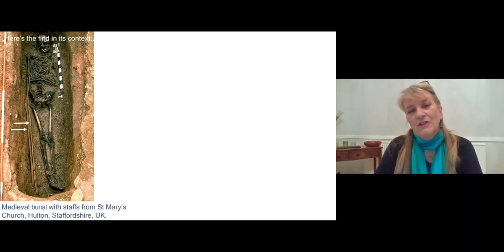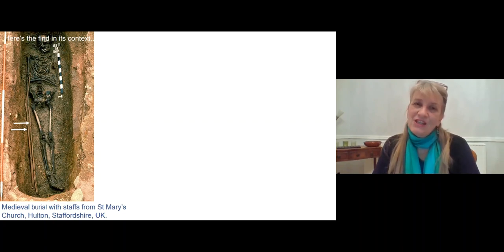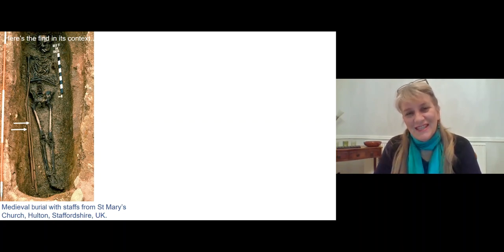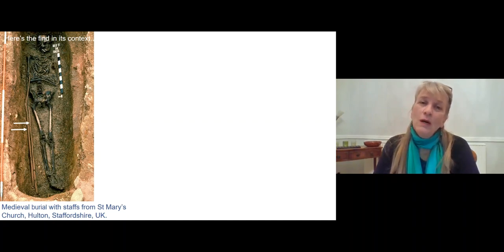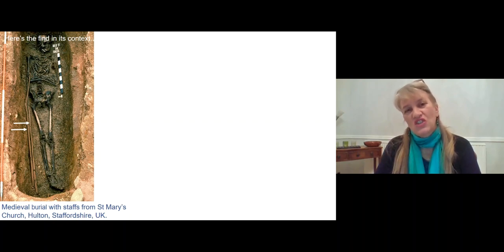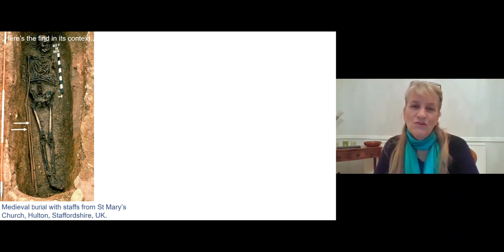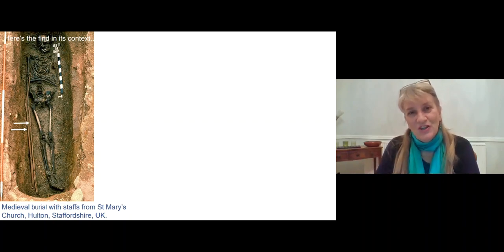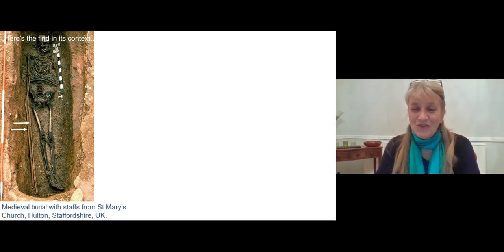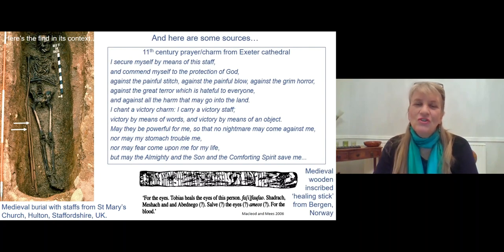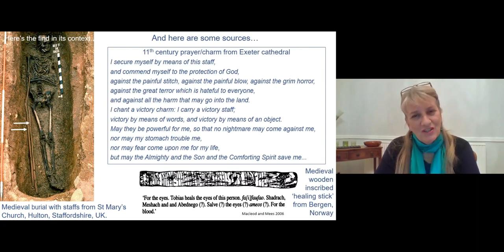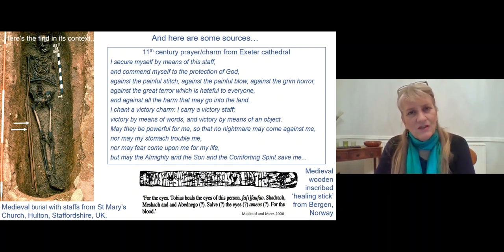Here's another example to look at. Here's the find in its context — you can see there's a burial here, and the two white arrows are pointing to two wooden staffs that are in that grave. Have a look and write a quick description of what you can say about those staffs just from looking at the picture. Now you've written your description, I'm going to give you a bit of additional source information, because we've got the context — we can see those staffs are in the grave.